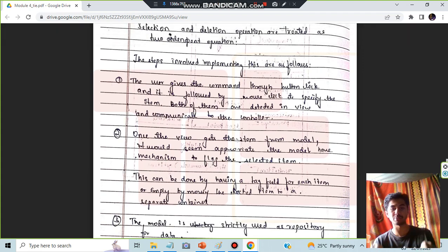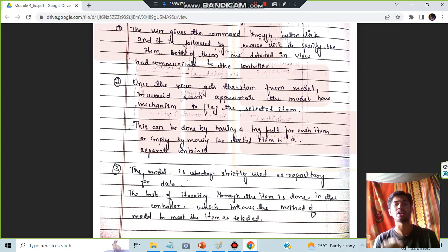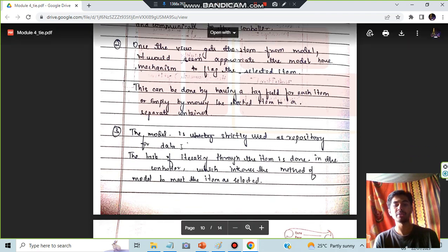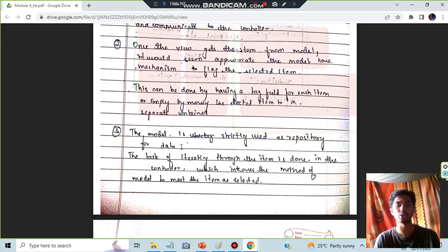When the item is selected, it will be marking it as selected. Then an attack can be attached so that it can be specified that this is the thing which is selected, and then it can be used as a repository for the data. The iteration is done through the item in the controller which invokes the method for the model to make the item as selected.